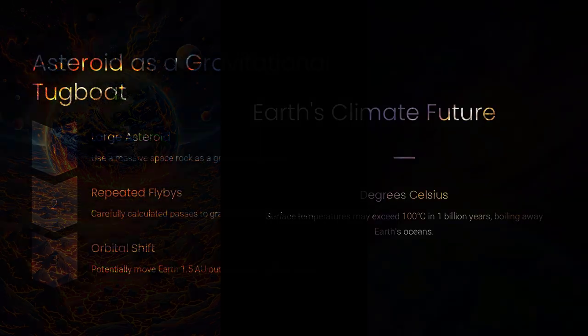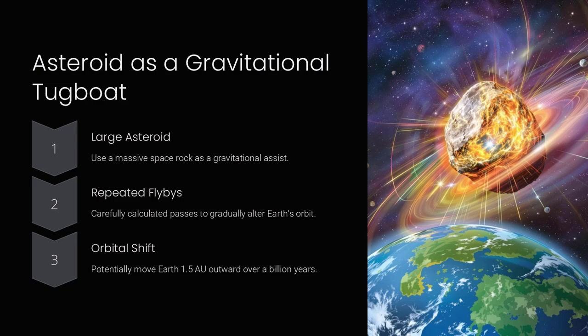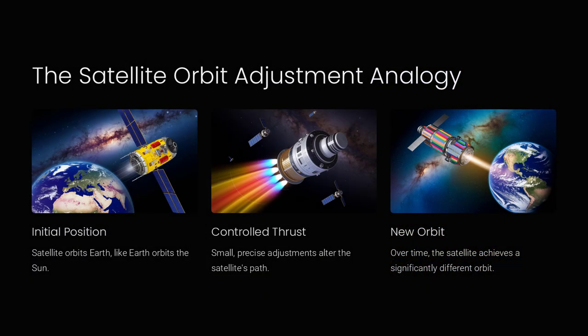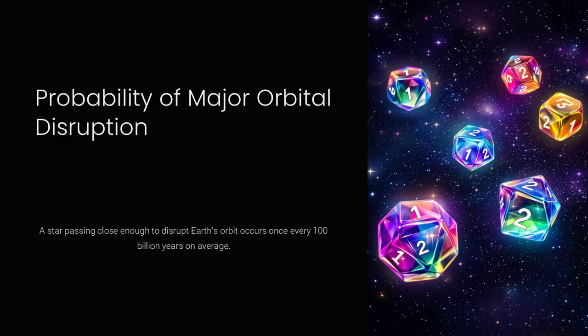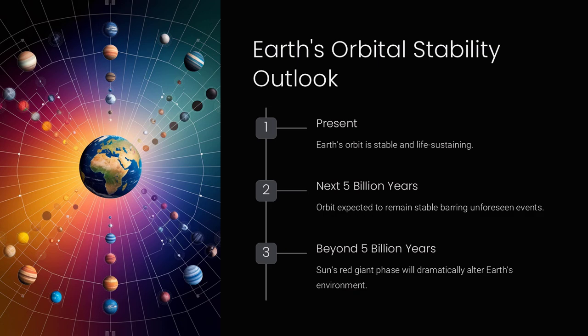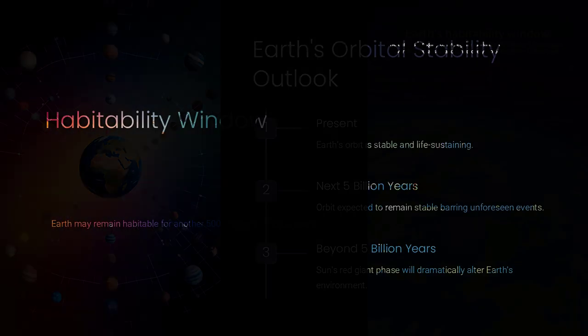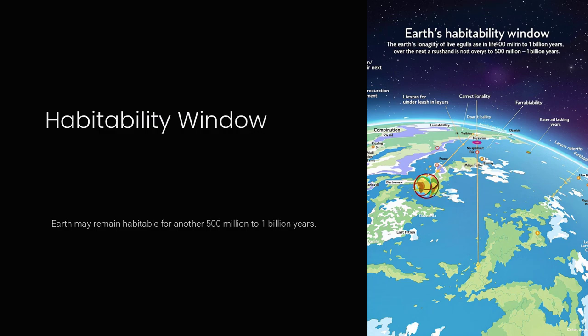So, what is Earth's ultimate fate? If left undisturbed, Earth will likely drift outward very slowly as the sun continues to lose mass. However, in about 5 billion years, the sun will expand into a red giant, possibly engulfing Earth or at least dramatically altering our orbit. If the sun sheds enough mass, Earth might escape entirely. Long before that happens though, our planet's climate will be severely affected, making it uninhabitable.